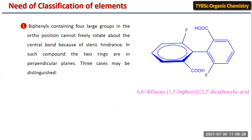Now when the biphenyl system contains four large different groups, free rotation is impossible. Earlier, when the ring was unsubstituted, rotation was possible and both phenyl rings existed in a coplanar nature. But due to the presence of bulky groups, rotation around the pivotal bond is restricted. Due to this, the molecule exists in different types of isomers — when considering its mirror image, the molecule exists in two different forms.